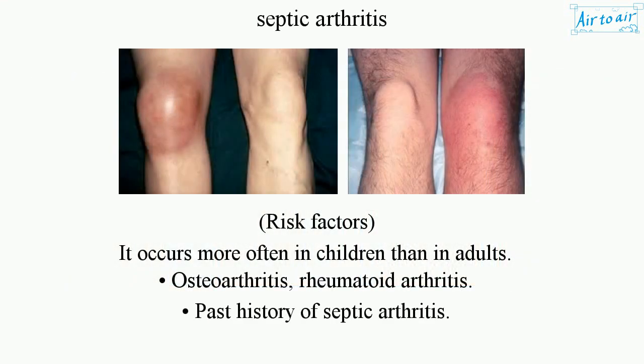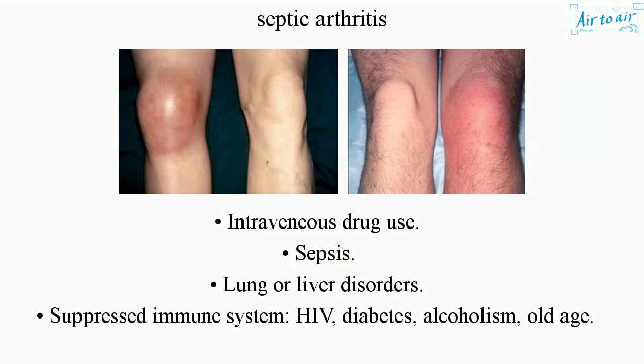Risk factors: It occurs more often in children than in adults. Other risk factors include osteoarthritis, rheumatoid arthritis, past history of septic arthritis, intravenous drug use, sepsis, lung or liver disorders, suppressed immune system, HIV, diabetes, alcoholism, and old age.